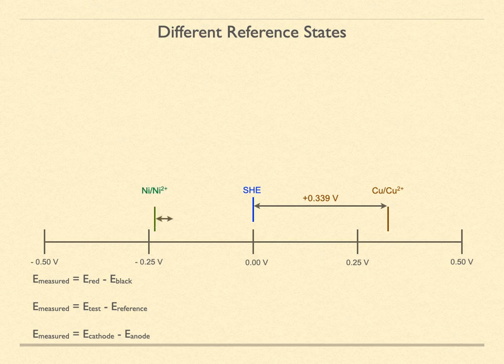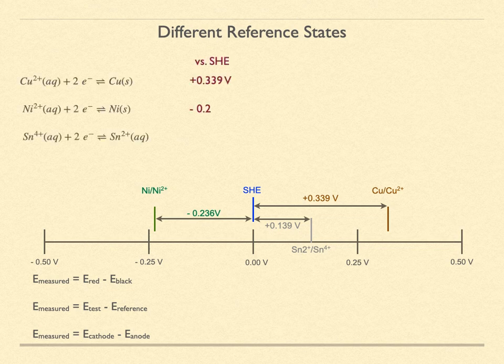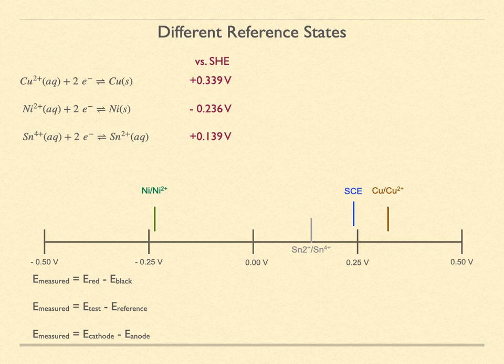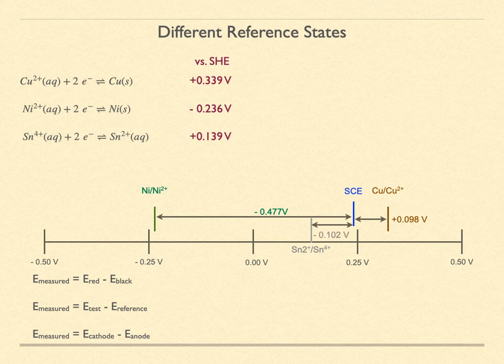If we replace the copper couple with the Ni/Ni²⁺ couple, we now measure a negative potential of minus 0.236 volts. Or we might put the Sn²⁺/Sn⁴⁺ couple in the test position, which gives a potential difference of plus 0.139 volts. Now, if we redo all of these measurements using the saturated calomel electrode as reference — located at plus 0.241 V on the number line — the copper measurement becomes plus 0.098 V, the nickel measurement shifts, and the tin reaction becomes negative with respect to SCE. Note that the tin reaction hasn't moved; it's the reference state that is changing.